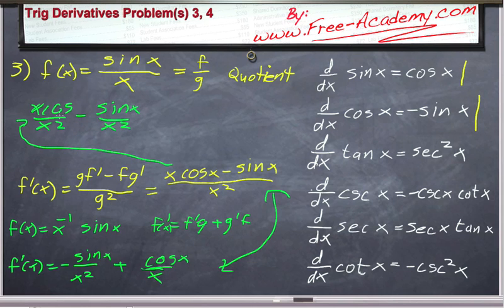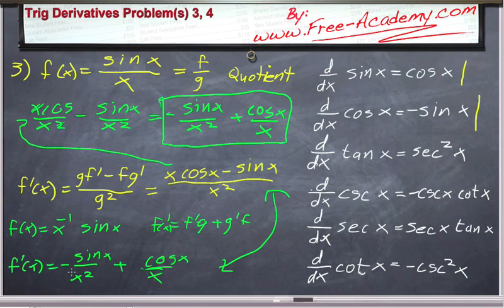Now all we need to do is cancel one x with the denominator in rearranged terms here. And we get negative sine of x over x squared plus cosine of x divided by x, which is exactly the same thing we got using the product rule.